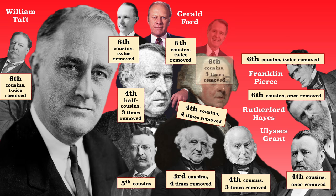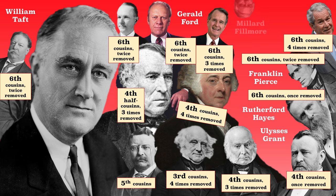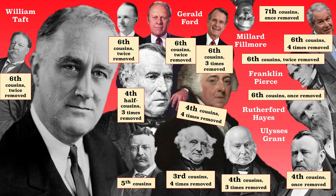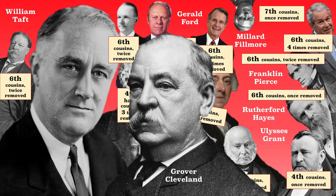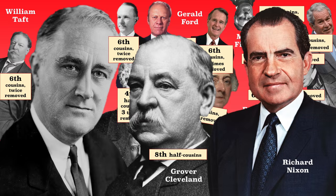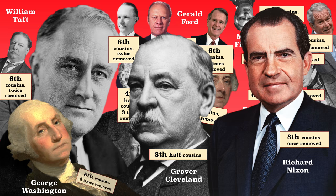He and George H.W. Bush are sixth cousins three times removed, and he and Bush Jr. are sixth cousins four times removed. He and Millard Fillmore, the 13th president, are seventh cousins once removed. He and Grover Cleveland, the 22nd and 24th president, are eighth half cousins. He and Richard Nixon, the 37th president, are eighth cousins once removed. And finally, he and George Washington are eighth cousins four times removed.